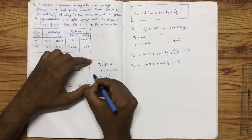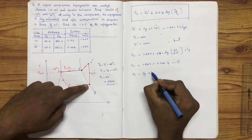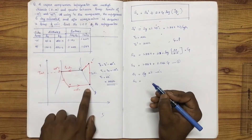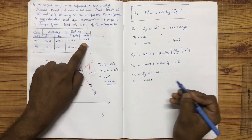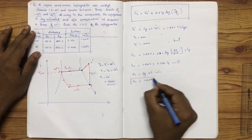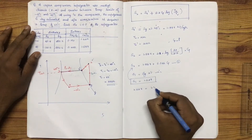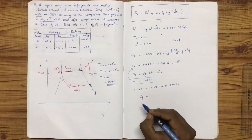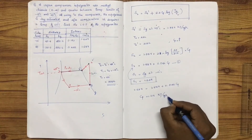Since the compression is isentropic, S1 equals S2. We found S2 equals 1.637. Setting 1.637 equal to 1.587 plus 0.046·Cp and solving, the value of Cp is 1.09 kJ/kg·K.